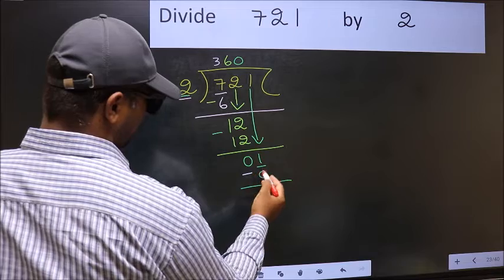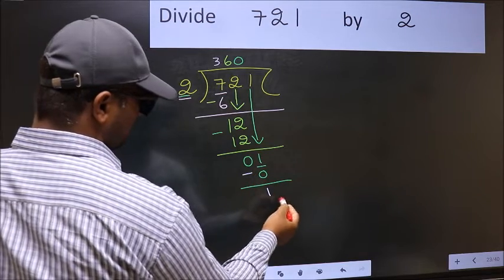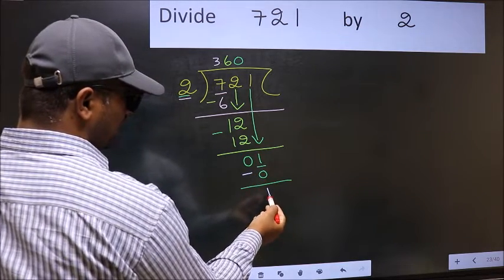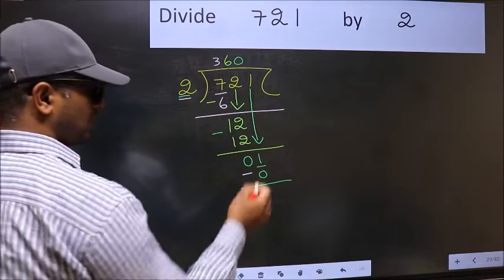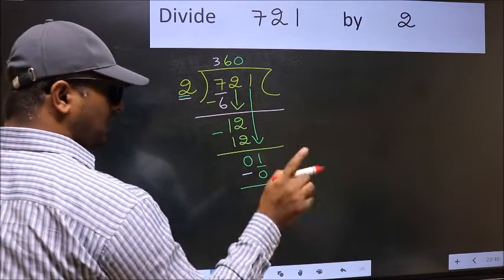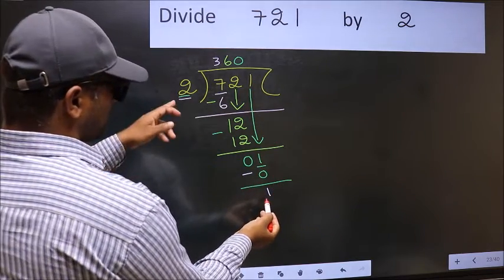Now, you subtract. 1 minus 0, 1. Over here, we did not bring any number down. And also, 1 is smaller than 2.